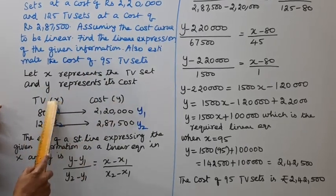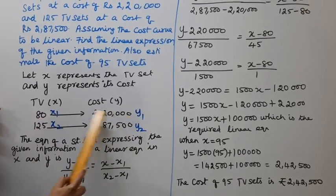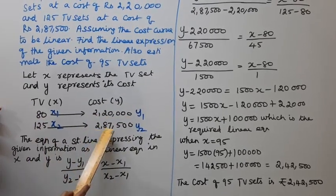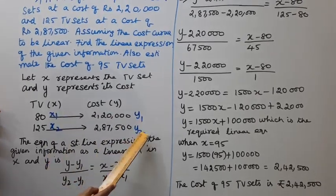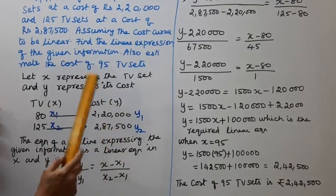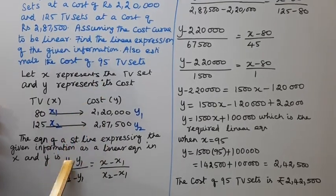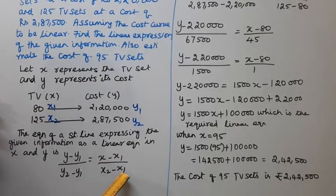This is x1, this is x2, this is y1, this is y2. Now which formula will we use? Two point formula: y minus y1 by y2 minus y1 equal to x minus x1 by x2 minus x1. The equation of a straight line expressing the given information as a linear equation in x and y.